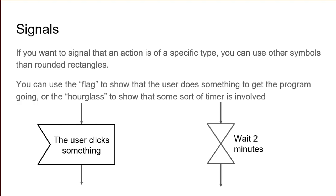A signal indicates something happening to the activity, just like an action, but it isn't the activity itself that performs the action — rather, it has it performed upon it. Like when the user clicks something in an interface, that is an action that will often lead to other actions and decisions, but it is initiated by the user. The diagram can have an arrow going into the signal flag to show that it waits for the user, and another arrow going out that leads to what will happen when the user does what the flag describes. For timers, you can use the convenient hourglass signal and just write how much time has to pass next to it.